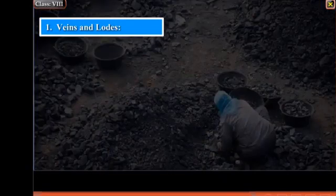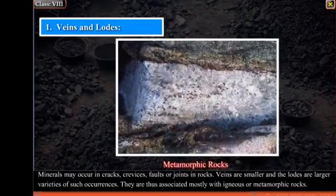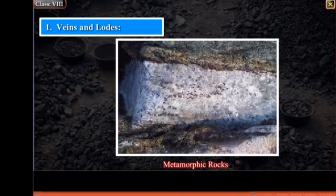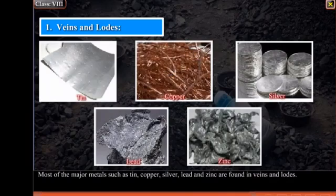Veins and Lodes: Minerals may occur in cracks, crevices, faults, or joints in the rocks. Veins are smaller and lodes are larger varieties of such occurrences. They are thus associated mostly with igneous or metamorphic rocks. Most minerals get solidified at different temperatures and different levels of the earth. Most of the major metals such as tin, copper, silver, lead, and zinc are found in veins and lodes.